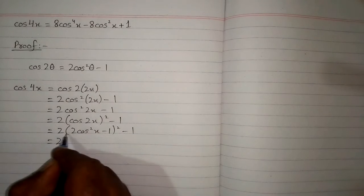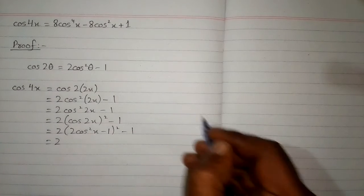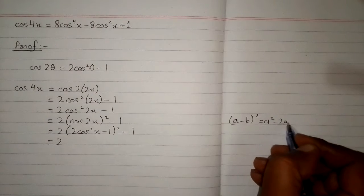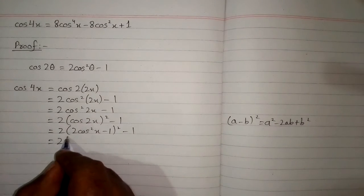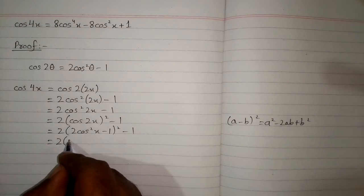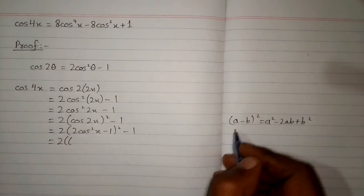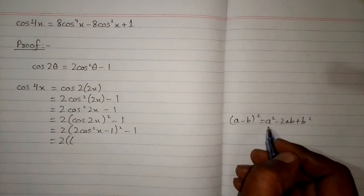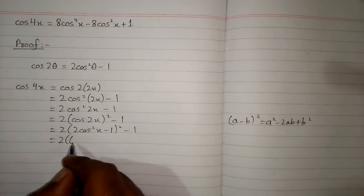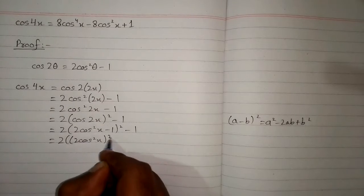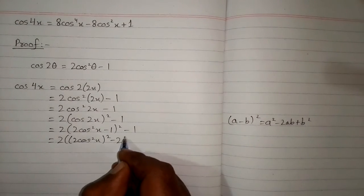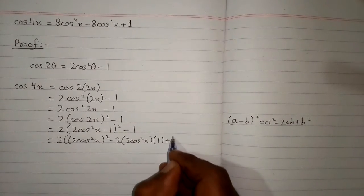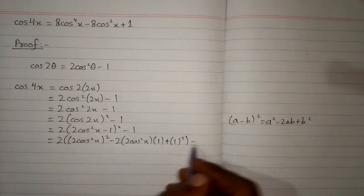We now apply the algebraic identity (a − b)² = a² − 2ab + b², putting 2cos²x in place of a and 1 in place of b. This gives (2cos²x)² − 2 × 2cos²x × 1 + 1² − 1.